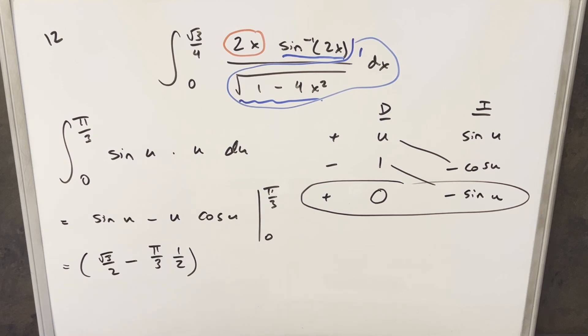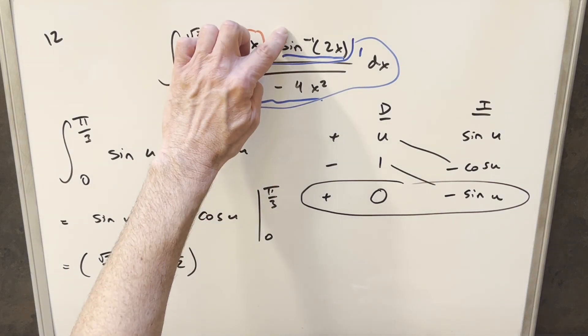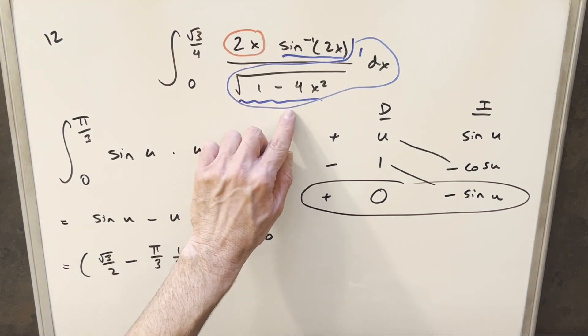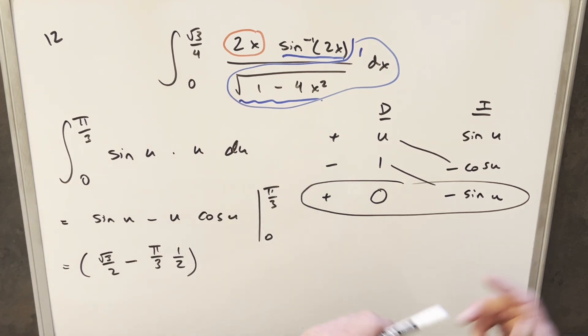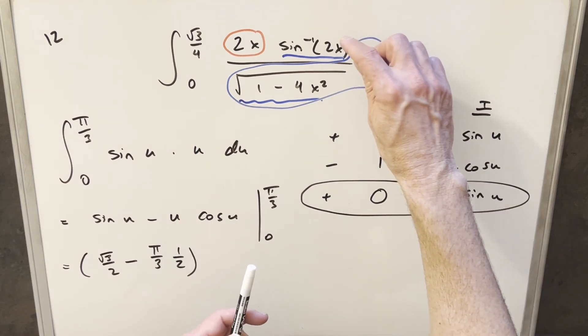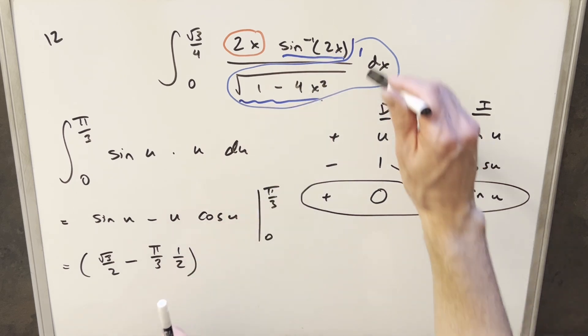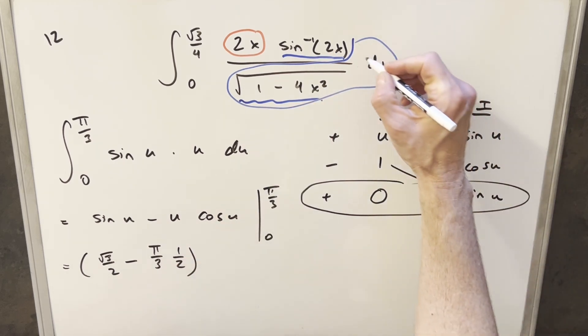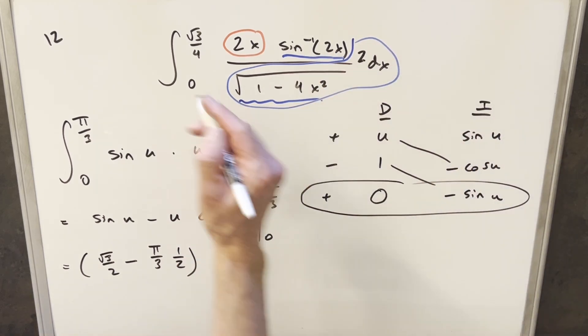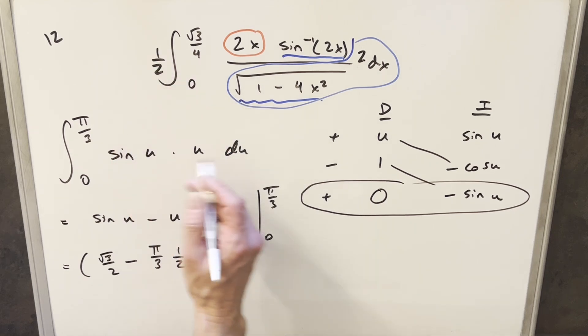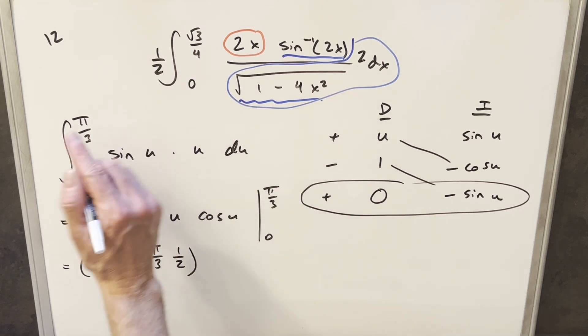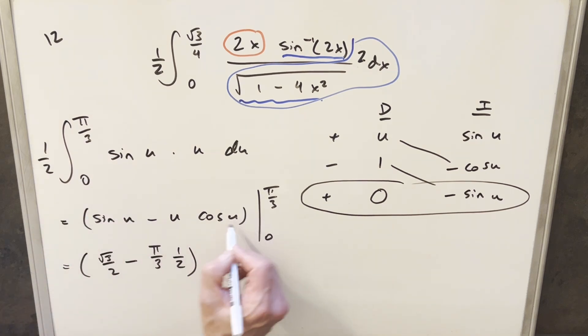And actually I realized a mistake I made. When we took the derivative earlier of arc sine 2x to get this, well I forgot to use the chain rule because of the 2x on the inside. So when we take the derivative of 2x, we're supposed to get a 2. So I needed to have a 2 here. But in order to do that, I needed to have a half out front. So this is fine, but what I need to do is bring this 1 half down that I forgot earlier. So we'll bring that down here, here, and we'll put that in right here.